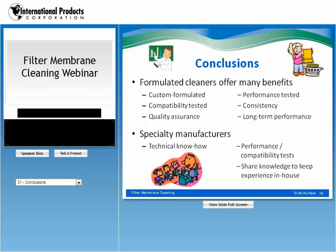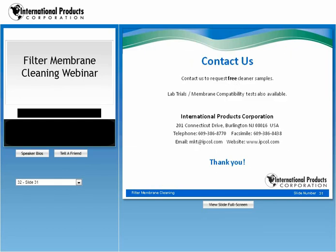This concludes the technical part of the webinar. I'd like to hand it back to Michelle for the conclusions. In conclusion, we know that formulated cleaners offer many benefits: they're custom formulated, performance tested, and compatibility tested. They offer consistency as well as quality assurance and long-term performance. Dealing with specialty manufacturers has benefits as well — their technical know-how, performance and compatibility testing, and sharing knowledge to keep experience in-house. We will be sending you a chart that outlines the soils, the filters, and the recommended cleaner types, included with our contact information. If you have any additional questions or need samples, please feel free to contact us.